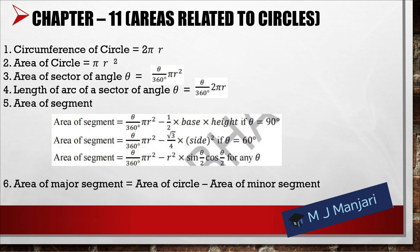Next we have Chapter number 11: Area Related to Circles. Circumference of a circle = 2πr. Area of circle = πr². Area of sector = (θ/360°) × πr². Length of arc of sector = (θ/360°) × 2πr. Area of minor segment = (θ/360°)πr² − (1/2) × base × height, when θ = 90°; or (θ/360°)πr² − (√3/4) × side², when θ = 60°; or (θ/360°)πr² − r² × sin(θ/2) × cos(θ/2), for any value of θ. Area of major segment = area of circle − area of minor segment.